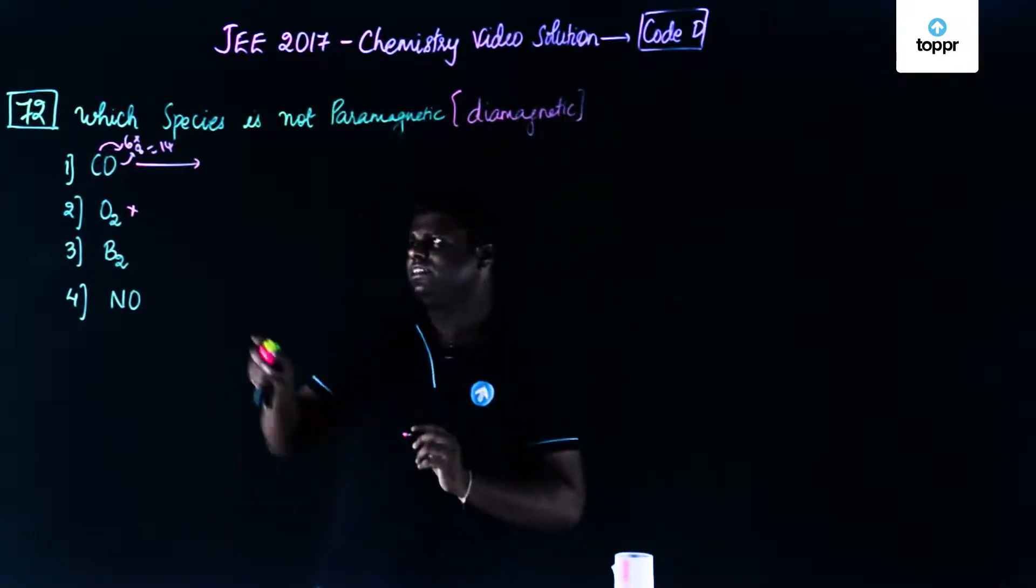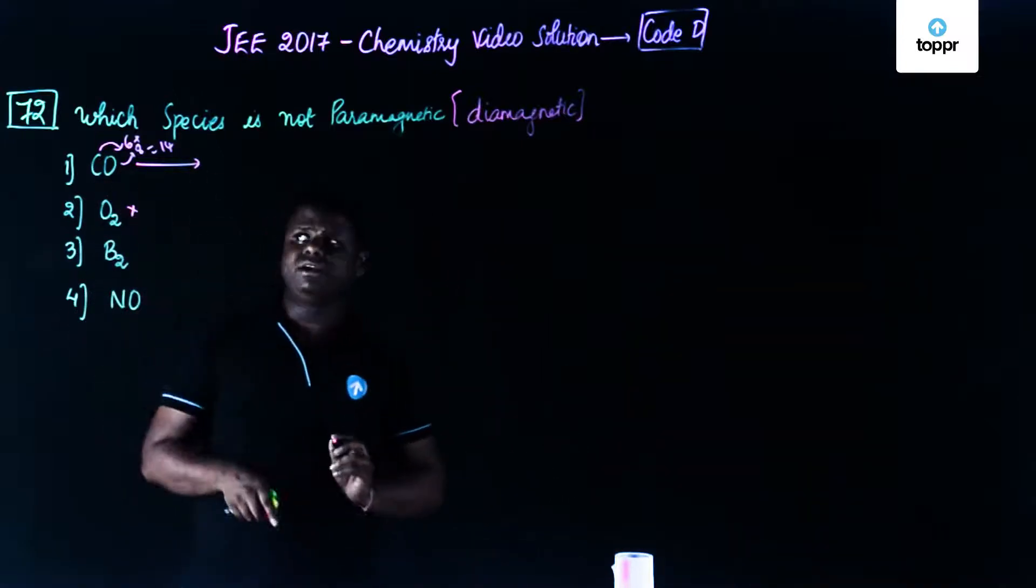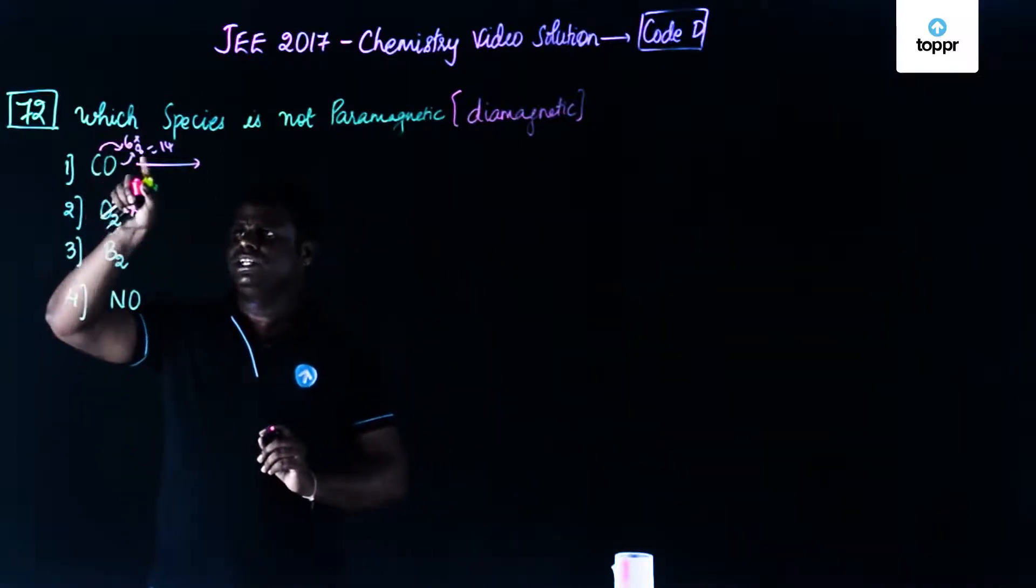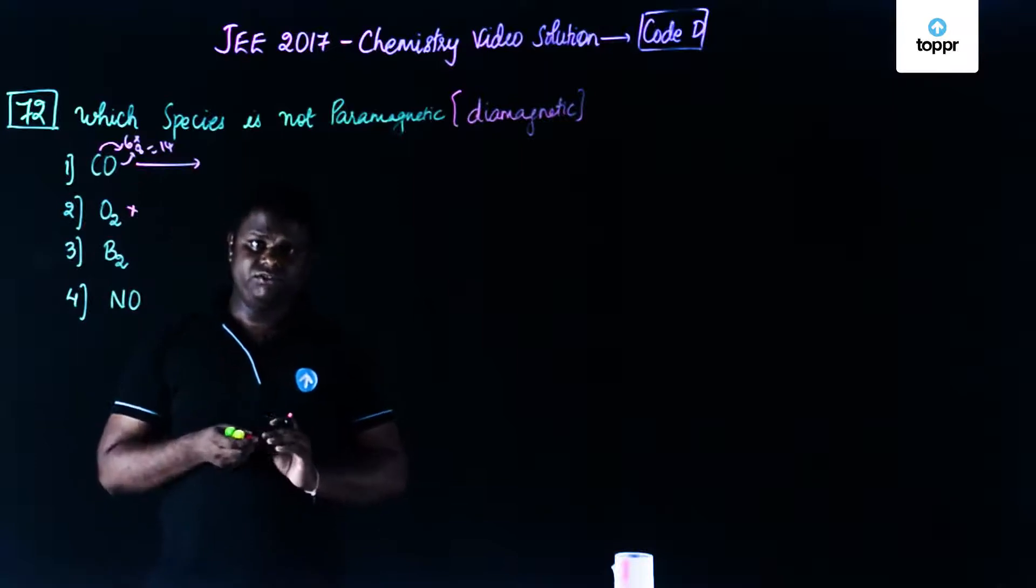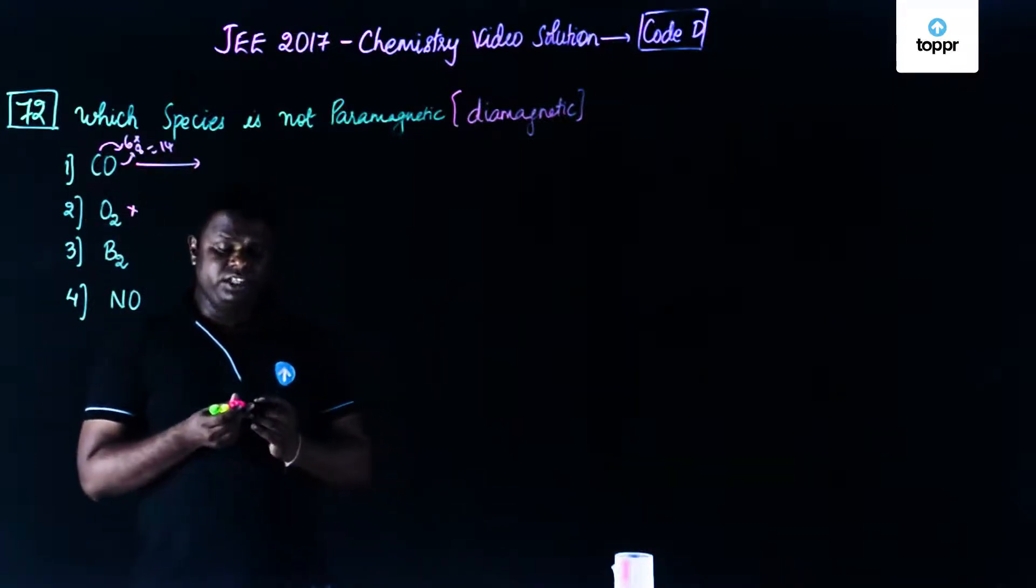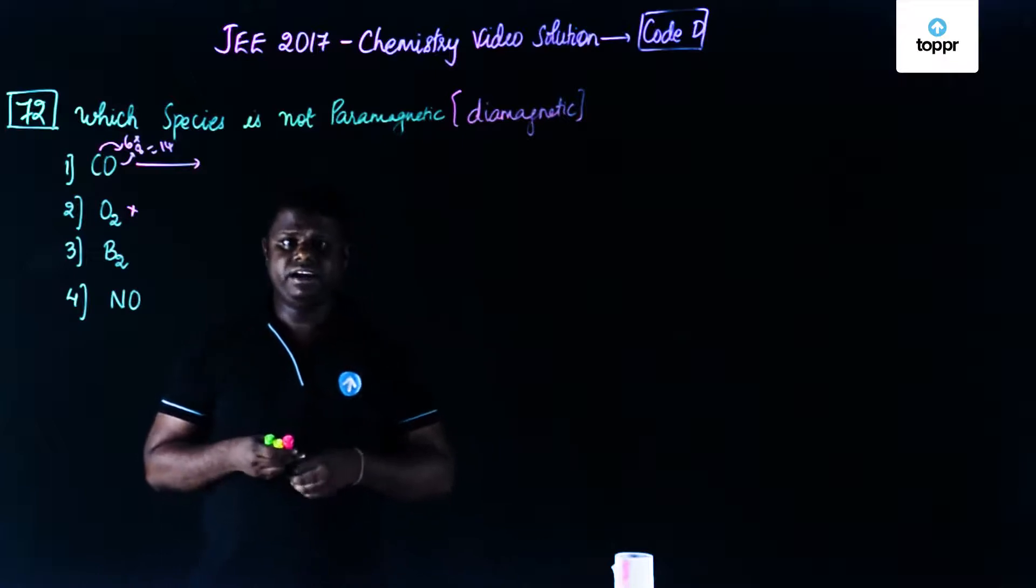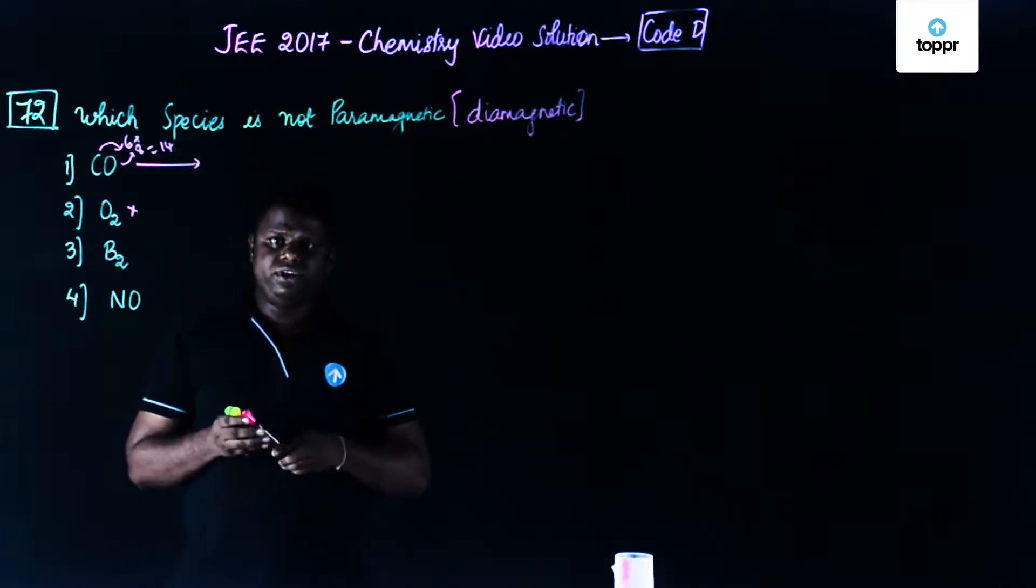Diamagnetic. Let's have a look what exactly this is. Let's first write down the MO diagram. First carbon has 6 electrons, oxygen has 8 electrons, total number of electrons are 14. Now let's write the electronic configuration. Either you could use the molecular orbital diagram or you could use the electronic configuration.